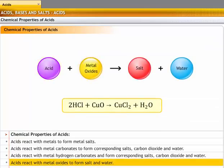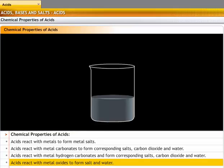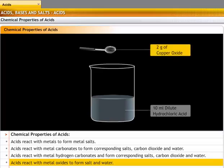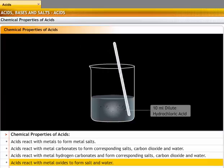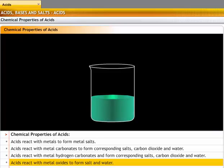Acids react with metal oxide to form salt and water. Let's conduct an experiment to prove this chemical property. Take 10 ml dilute hydrochloric acid in a beaker. Add 2 grams of copper oxide to the beaker. Stir the mixture continuously. You will find that the black copper oxide disappears, and a blue-green solution is formed in its place. This blue-green solution is copper chloride.